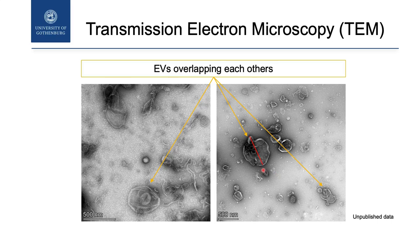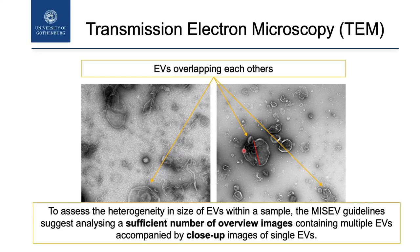I can calculate these diameters, but probably it's not true because here I have another vesicle. Or maybe I can look at these diameters, but I don't know exactly where the limit of these vesicles is. We have to keep in mind that there is a problem. Still, transmission electron microscopy and the negative stain technique can be used to look at the size of vesicles. But following the MICEF guidelines, to look at size we have to show a sufficient number of overview images as well as close-up images to really show what we have.